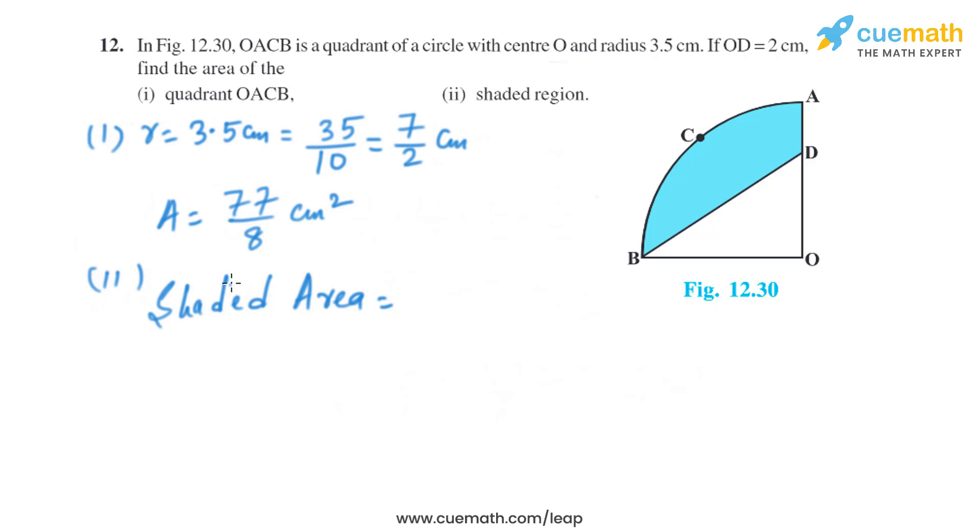Now in the second part we have to find the shaded area. To find the shaded area, we have the area of the quadrant OACB. We can find the area of the triangle ODB and just subtract them. So it is 77 divided by 8 minus the area of the triangle, which is half into the radius, which is 7 by 2, multiplied by OD, which is 2. On solving this we will get 77 divided by 8 minus 7 by 2, which is the same as 49 divided by 8 square centimeter. So that is the shaded area.